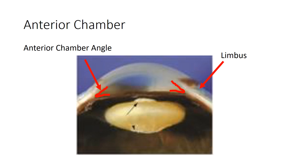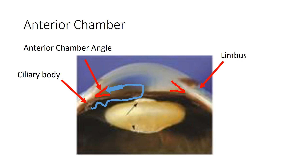The anterior chamber is filled with aqueous humor, which is produced behind the iris by epithelium covering the ciliary body. The aqueous humor circulates over the anterior lens, making its way through the iris-lens channel into the anterior chamber, and eventually exits through the angle's drain.